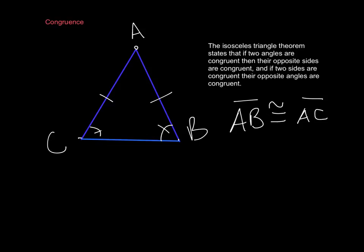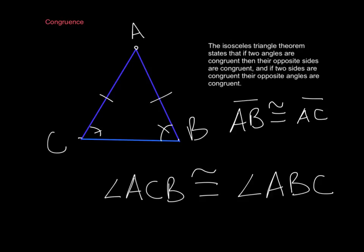The congruent symbol is basically just an equal sign with a squiggly line over top. And since you know those segments are equal, and you already know the angles opposite those segments are equal or congruent, you could do angle ACB is congruent to angle ABC.